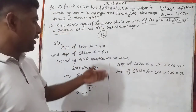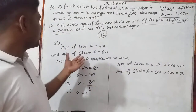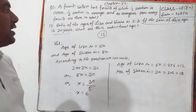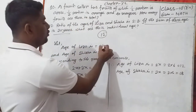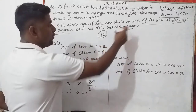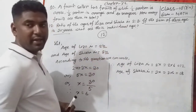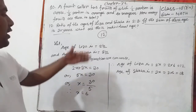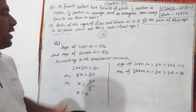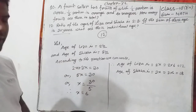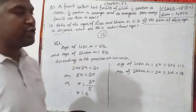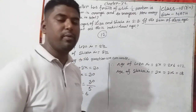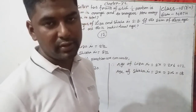I hope everybody understands these questions. We found the value of x equals 6, and we wrote 2x plus 3x. Thank you everybody. I hope everybody understands my class. Thank you.